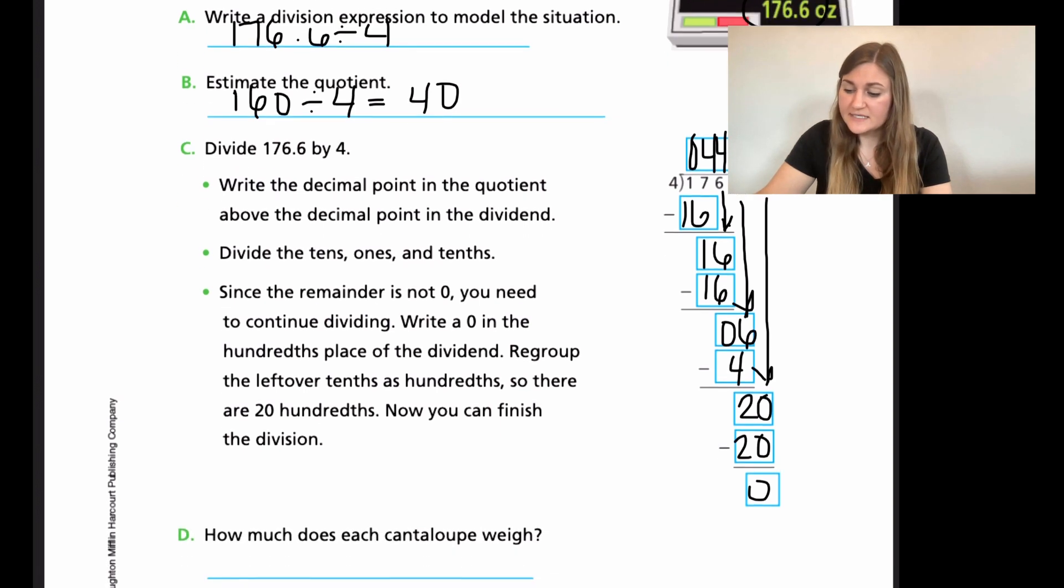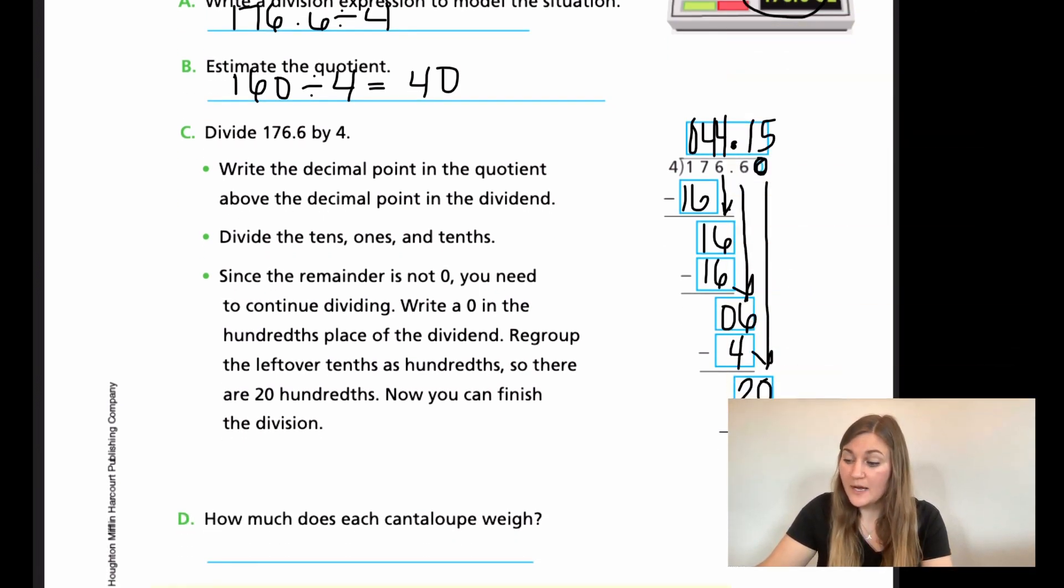So for D, it says, how much does each cantaloupe weigh? Well, we just found out that it weighs 44.15 and our units here is ounces.